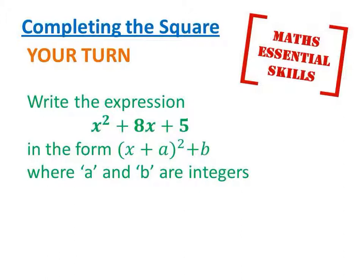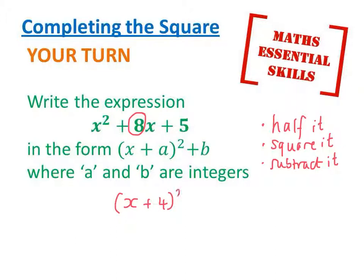Have a go at this one and try remembering the shortcut, and pause before you see the answer. Okay, so hopefully you've remembered that it's this number that we're going to be dealing with. I'm going to halve it, half of 8 is 4, I'm going to square it, 4 squared is 16, and I'm going to subtract it. So I'm on 5, and I'm going to subtract 16, and that makes minus 11.